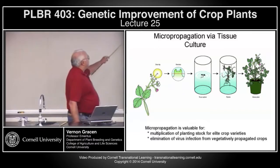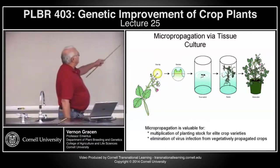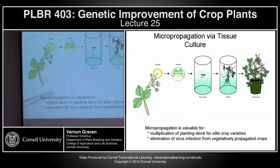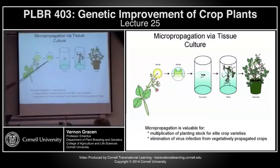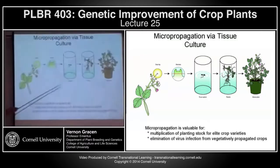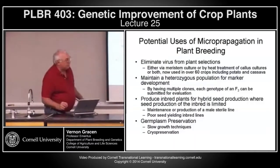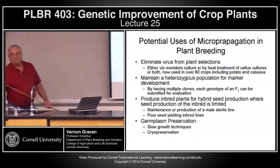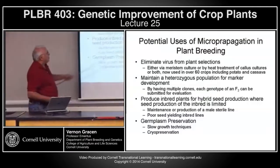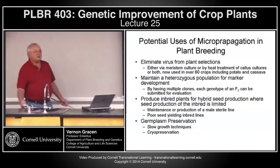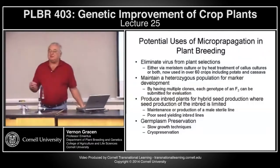By micropropagation, you can start with any of several explants from the plant tissue — shoot tips, leaf tissues, stem tissues, root tips. Basically you just propagate thousands of these little plantlets. Its uses are primarily to eliminate viruses from vegetatively propagated plants, either through meristem culture or by heat-treating callus cultures. It's now used in over 60 crops, and it's used extensively in potatoes and cassava.